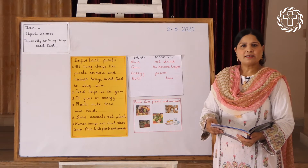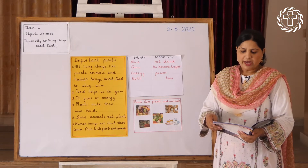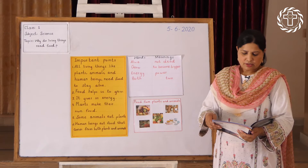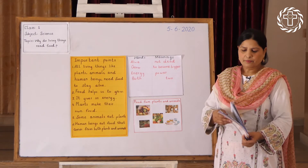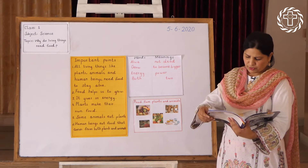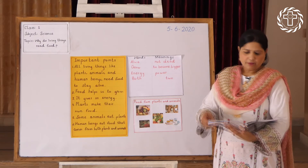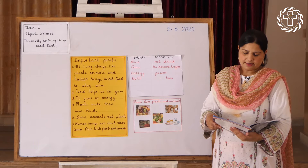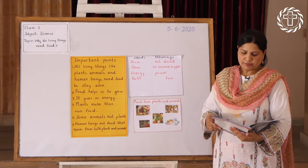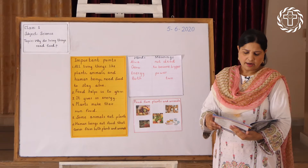Living things need food to get energy, to stay healthy, to grow, to make new body cells, and to fight against diseases. Now open your books to page number five. All living things like plants, animals, and human beings need food to stay alive.